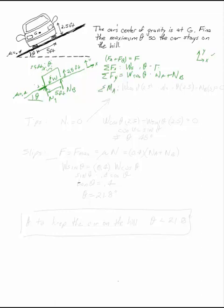My sum of the moments I will consider to be taken at wheel A. So I get w cosine theta times 2.5. W sine theta turns in the other direction and Nb times 5. Those all have to equal zero.